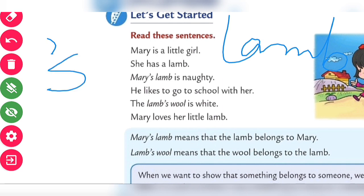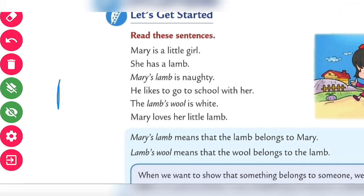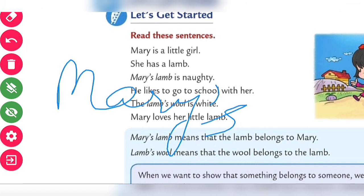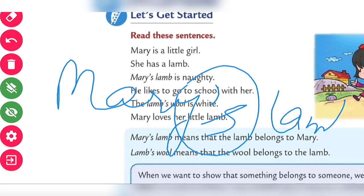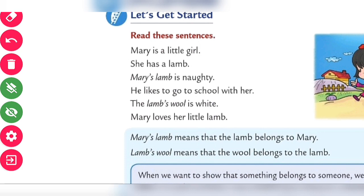We write this with the help of an apostrophe. This symbol is called an apostrophe. We use the apostrophe when something is belonging to somebody. Here you can see that after Mary there is an apostrophe 's', because the lamb is belonging to Mary — so we write Mary's lamb.